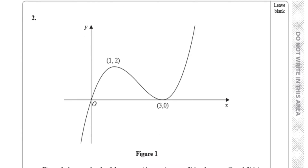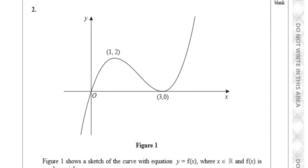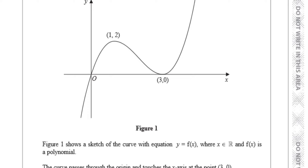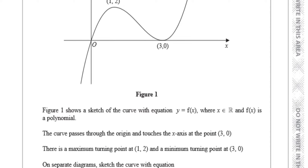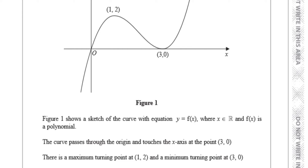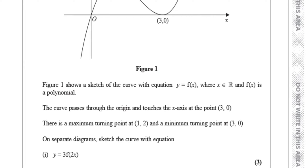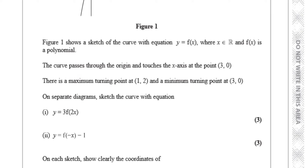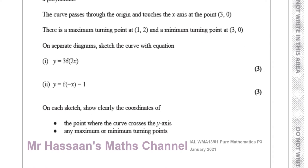Here we have figure 1, which shows the sketch of the curve with the equation y equals f of x, where x is a member of the real numbers and f of x is a polynomial. The curve passes through the origin and touches the x-axis at the point (3, 0). There is a maximum turning point at (1, 2) and a minimum turning point at (3, 0). On separate diagrams, sketch the curve with equation: number 1, 3 times f of 2x, and number 2, f of minus x minus 1. On each sketch, show clearly the coordinates of the point where the curve crosses the y-axis and any maximum or minimum turning points.